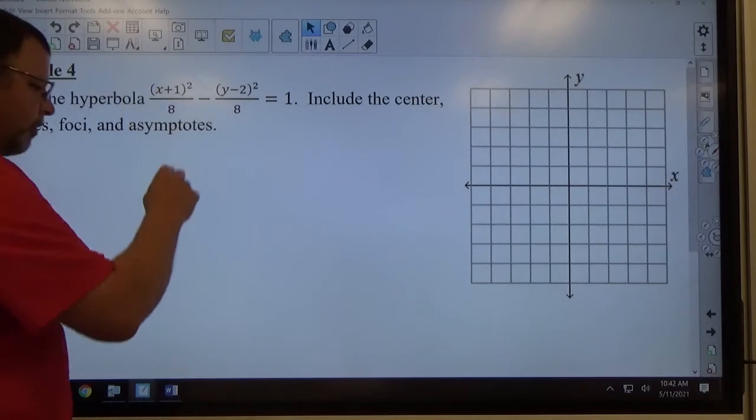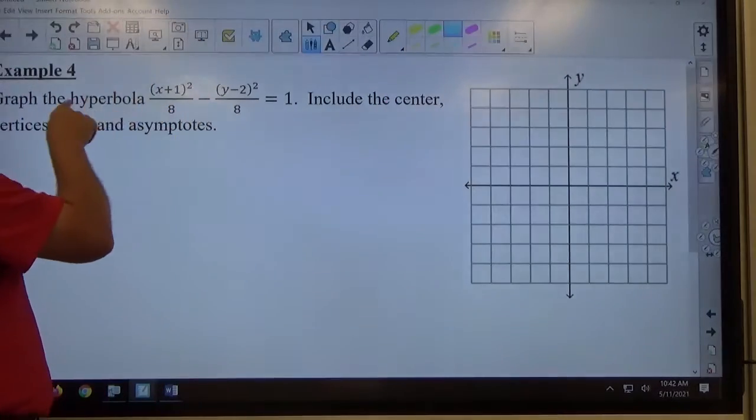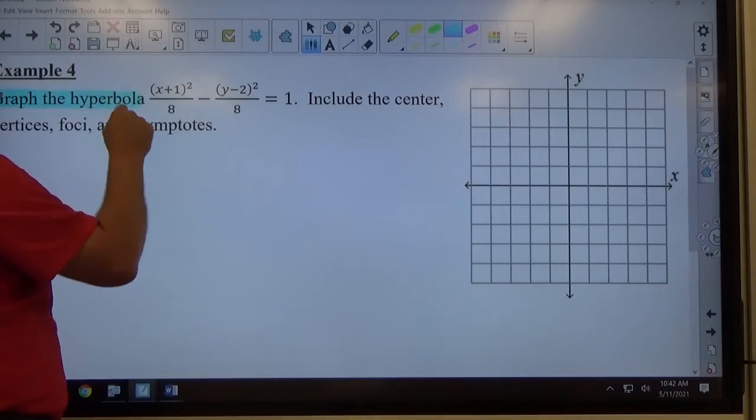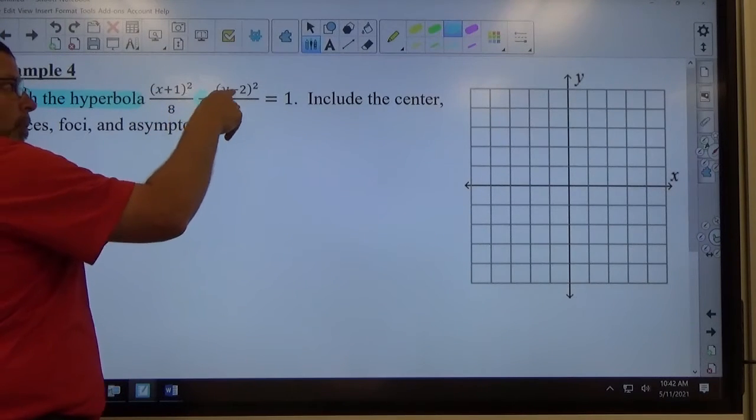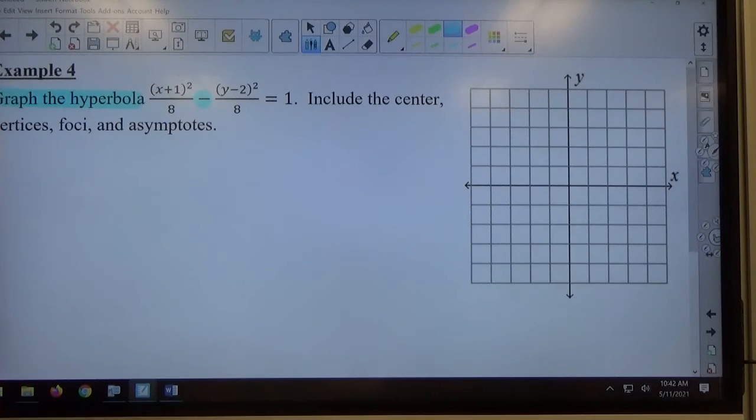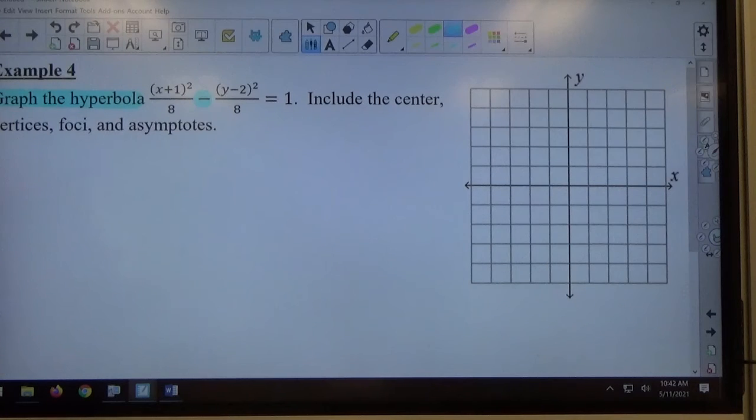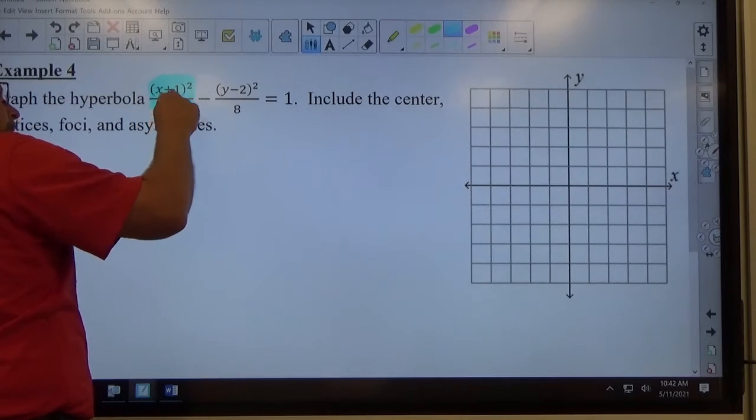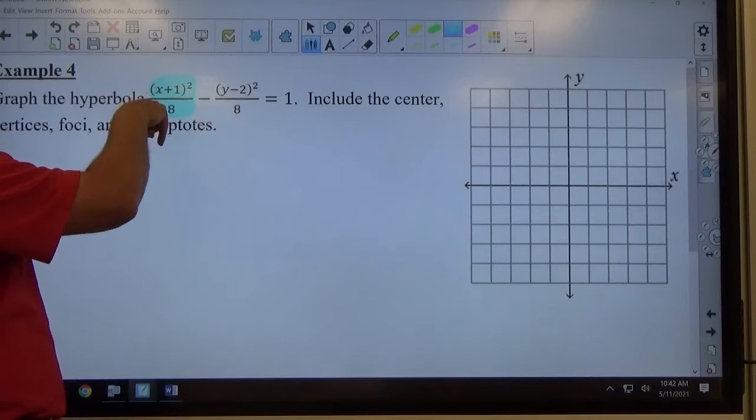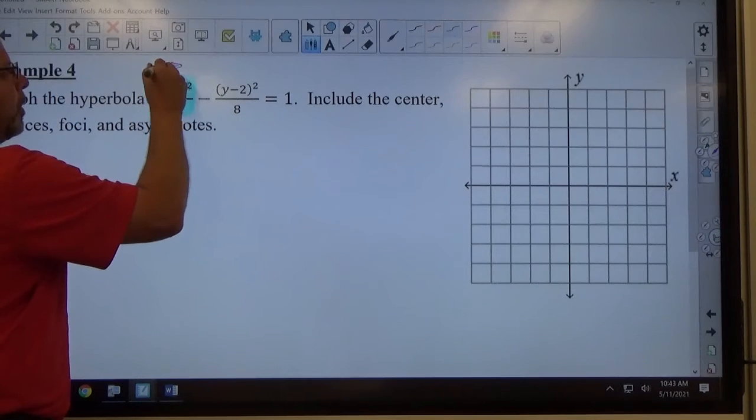Once again, I've got my standard form already written for me. I can see it's a hyperbola. I see the standard form of hyperbola - I've got an x squared object minus a y squared object equals 1. Either x² minus y² or y² minus x² is going to create a hyperbola every time. Since this time my (x+1)²/8 is the positive term, that's positive, that's negative, that tells me it's going to be a left-right hyperbola.